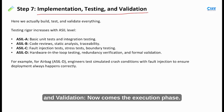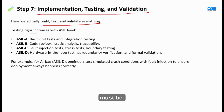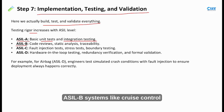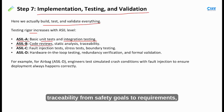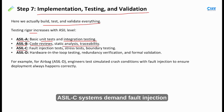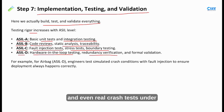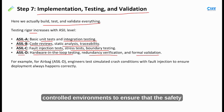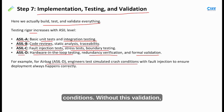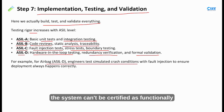Step 7: Implementation, Testing and Validation. Now comes the execution phase — we implement, test and validate everything. Each ASIL level defines how rigorous the testing must be. For ASIL A systems like parking sensors, basic unit tests and integration tests are usually sufficient. ASIL B systems like cruise control require code reviews, traceability from safety goals to requirements and more systematic verification. ASIL C systems demand fault injection testing, where engineers simulate component failures to see how the system responds. And for ASIL D systems such as airbags, we need the most intensive validation: hardware-in-the-loop simulations, redundancy verification and even real crash tests under controlled environments to ensure that safety functions always activate when needed. This phase proves that the safety design actually works in both normal and faulty conditions — without this validation, the system cannot be certified as functionally safe.